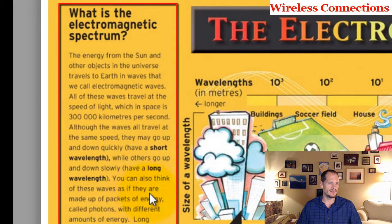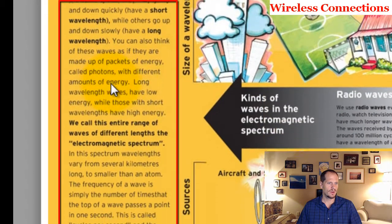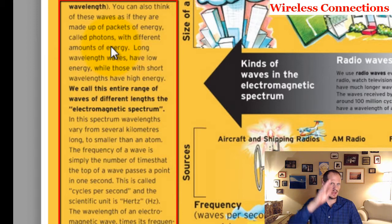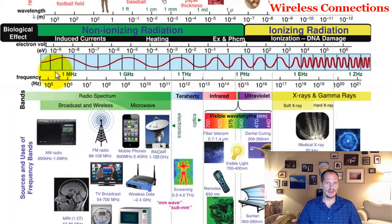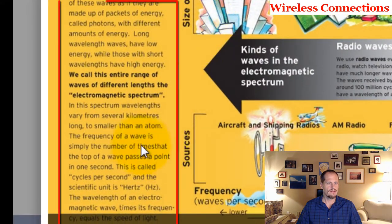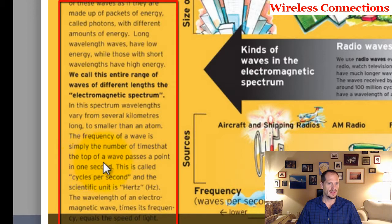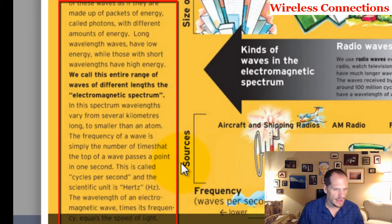You can also think of these waves as packets of energy called photons with different amounts of energy. Long wavelength waves have low energy, while those with short wavelengths have high energy. The entire range of waves of different lengths is the electromagnetic spectrum — wavelengths vary from several kilometers long to smaller than an atom. Frequency is the number of times the top of the wave passes a point per second, called cycles per second, and the scientific unit is hertz. The wavelength of an electromagnetic wave times its frequency equals the speed of light.